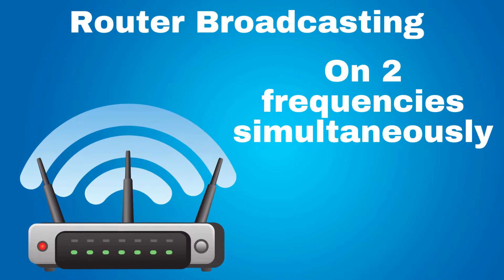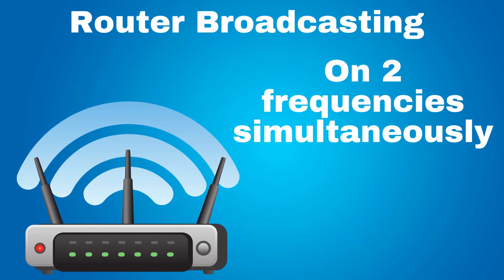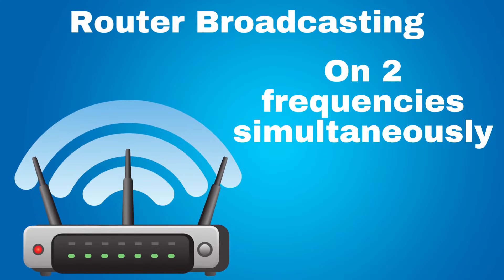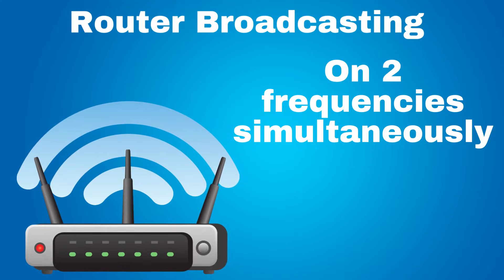If you have a dual band router, you may be broadcasting on two frequencies simultaneously. When your phone gets out of range of the 5 GHz network band, it may switch to your router's 2.4 GHz band.